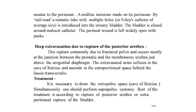The bladder is closed around the Malecot catheter and the perineal wound is left widely open with packs. In deep extravasation due to rupture of the posterior urethra — commonly from a fractured pelvis, occurring mostly at the junction between the prostatic and membranous urethra just above the urogenital diaphragm — the extravasated urine collects in the cave of Retzius and ascends in the extraperitoneal space behind the fascia transversalis. Treatment requires drainage of the retropubic space (cave of Retzius) simultaneously with suprapubic cystostomy; the rest of the treatment is according to the rupture of the posterior urethra or extraperitoneal rupture of the bladder.